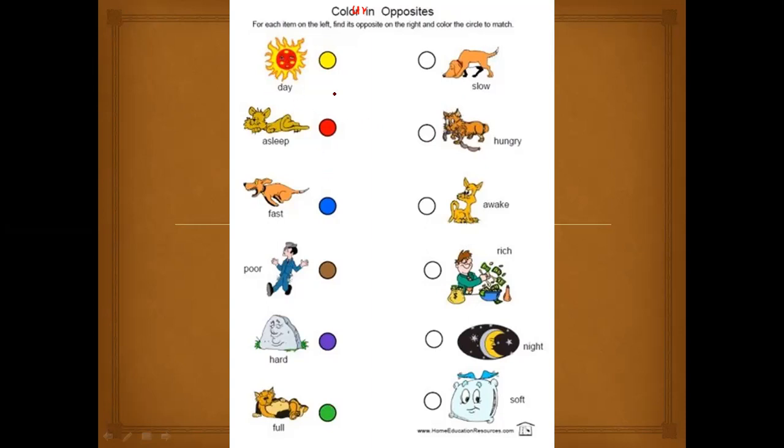For each item on the left find its opposite on the right and color the circle to match. So whatever is the color here, same color first you will match and color it in this circle. Let's read all of them first: day, asleep, fast. I hope you remember I've told you not all words will be dealt with vocabulary sound. We cannot always use the sounds drill for all the words. So what we have to do, we have to remember all of these words properly and read it as it is.